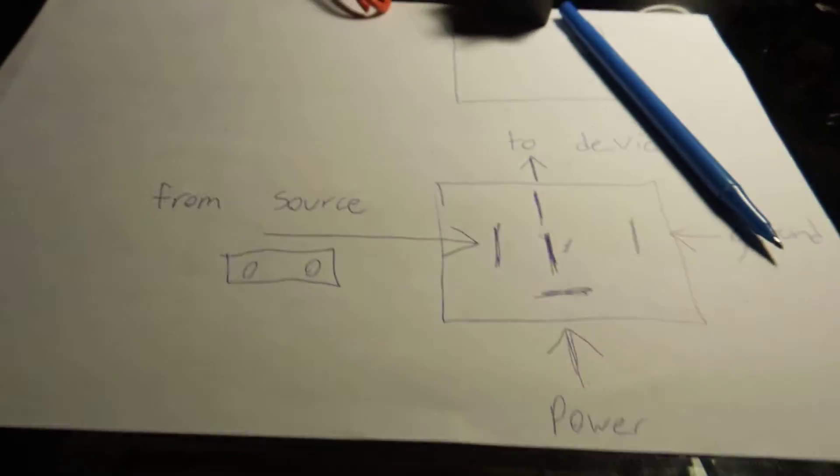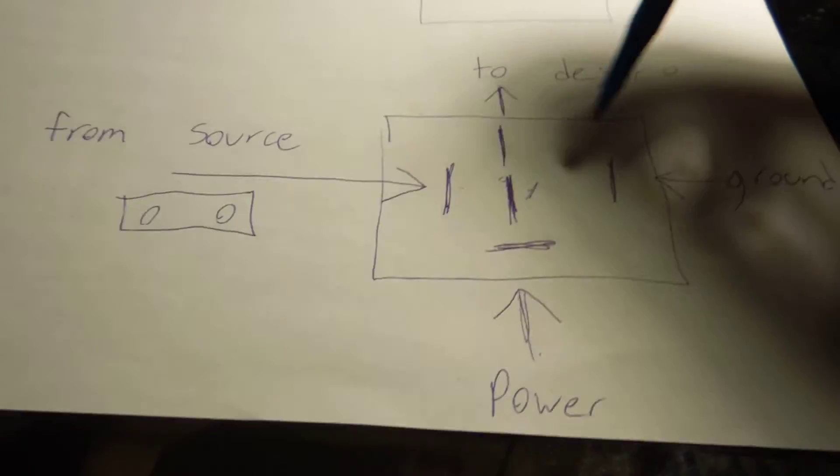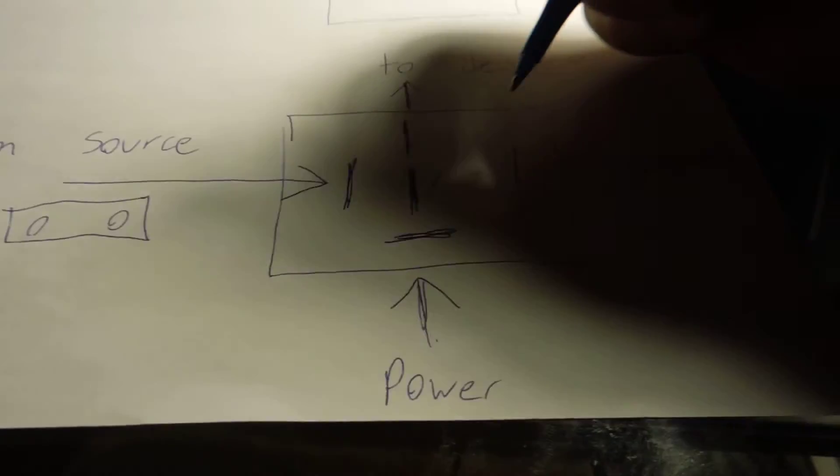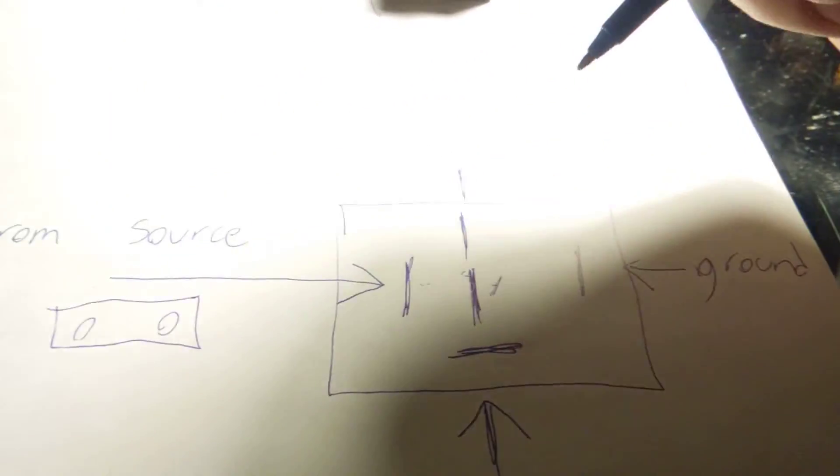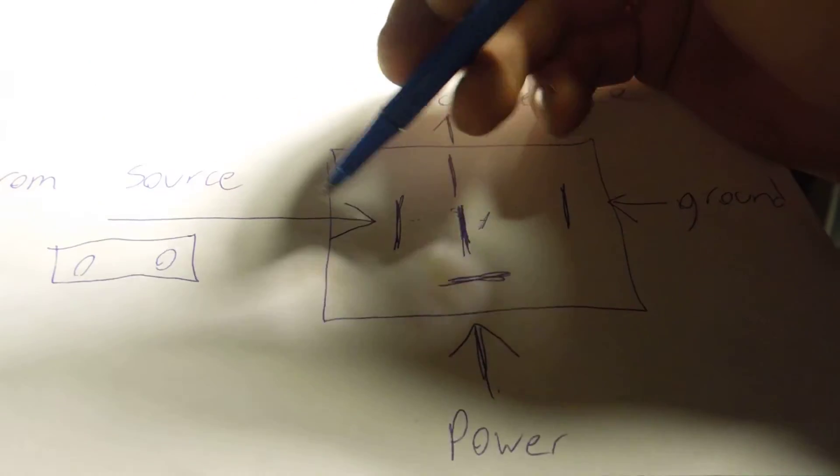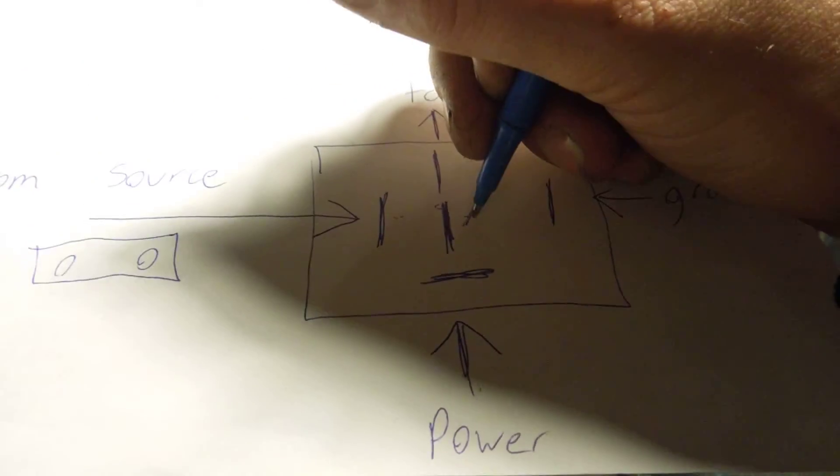Now you're wondering, so what's the difference between a four-pin and a five-pin relay then? Well, imagine it like this: when the relay is not activated, so we'll say the source is not on.